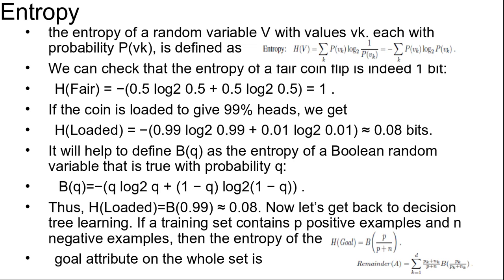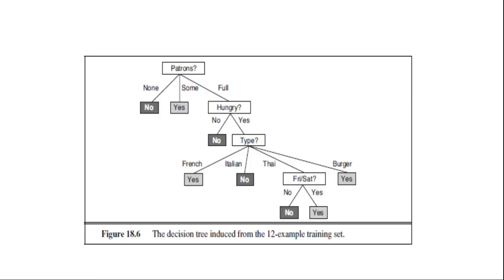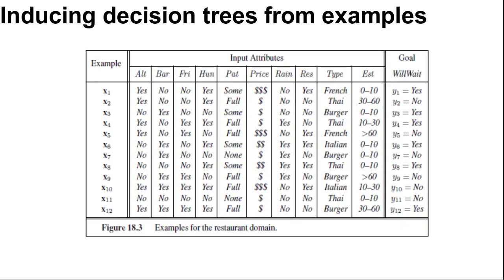For the restaurant training set in the figure, with p=6 and n=6, the corresponding entropy is B(0.5) or exactly 1 bit. A test on a single attribute A might give us only part of this 1 bit.